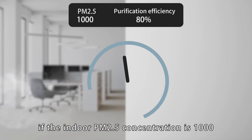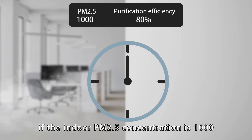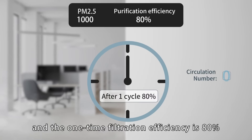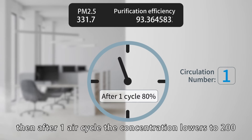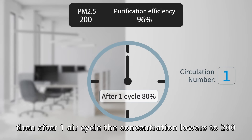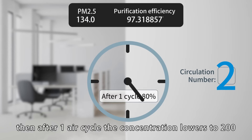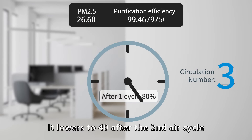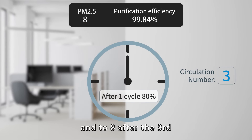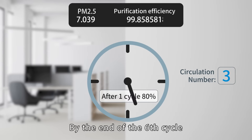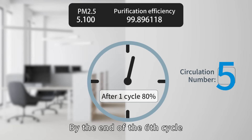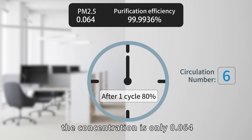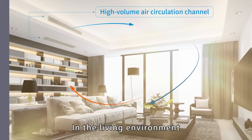For example, if the indoor PM2.5 concentration is 1000 and the one-time filtration efficiency is 80%, then after one air cycle the concentration lowers to 200, it lowers to 40 after the second air cycle, and to 8 after the third. By the end of the sixth cycle, the concentration is only 0.064.